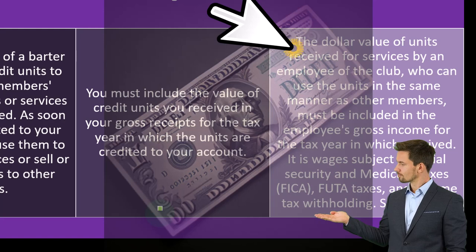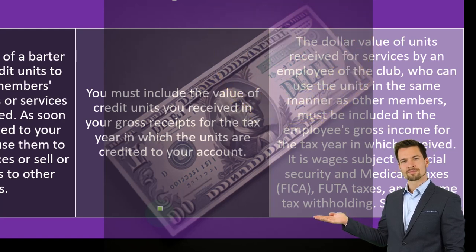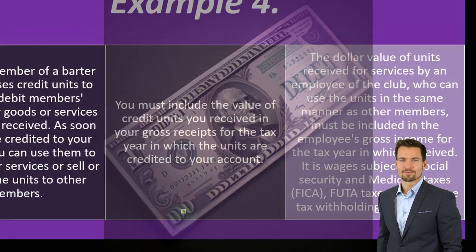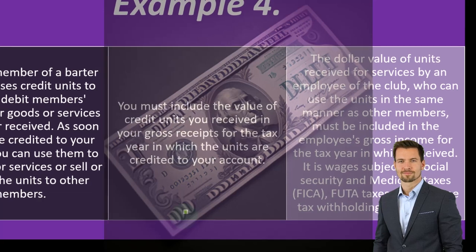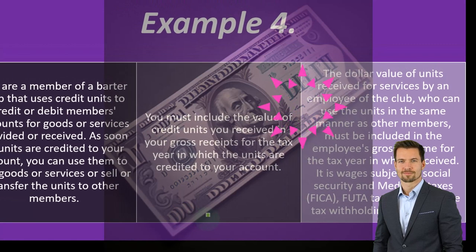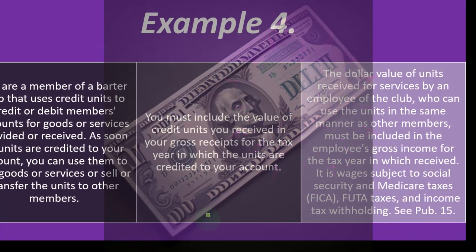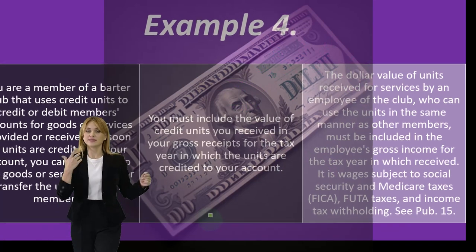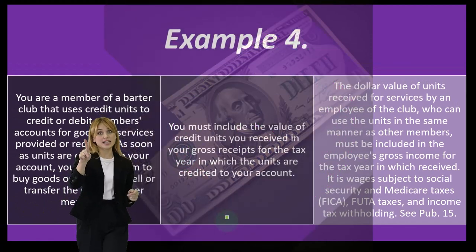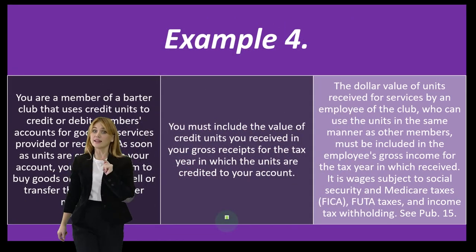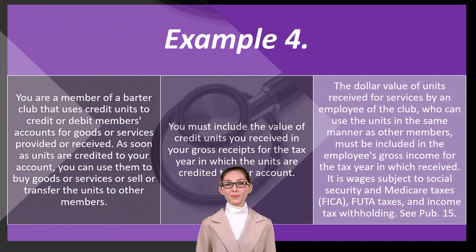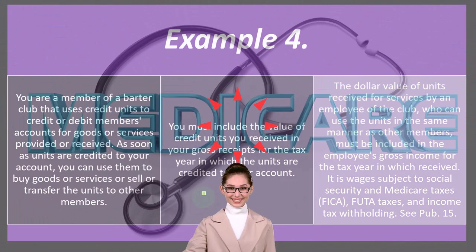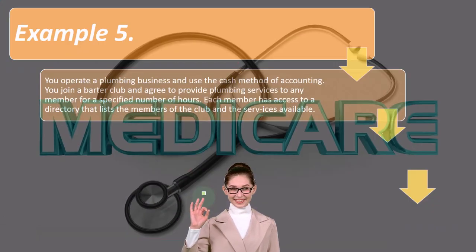The dollar value of units received for services by an employee of the club — who can use the units the same way as other members — must be included in the employee's gross income for the tax year received. It is wages subject to Social Security and Medicare taxes, FICA and FUTA taxes, and income tax withholding. See Publication 15 for more complex examples.